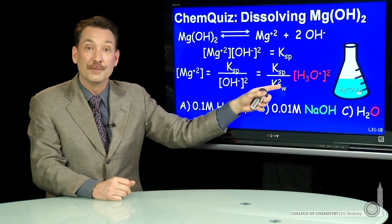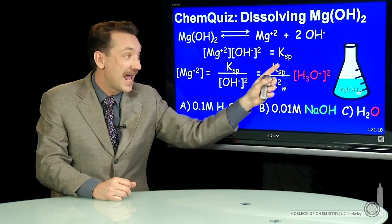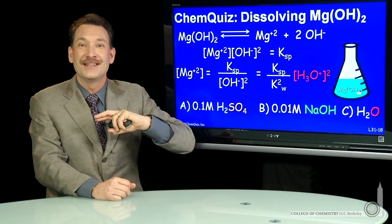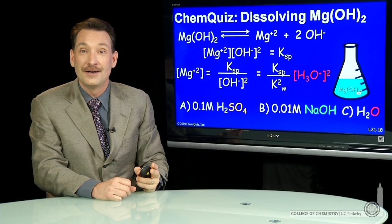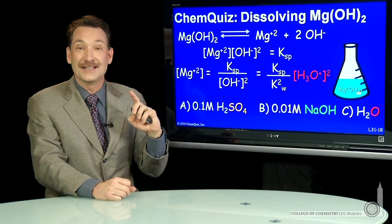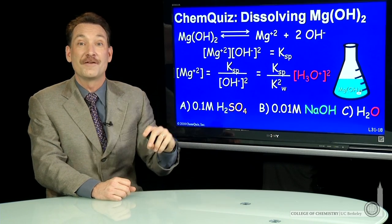So I can use that equilibrium and this equilibrium simultaneously. When I do, I get an analytical expression for the magnesium ion concentration versus the acid concentration. And it's a strong function. It goes as the square of the acid concentration. So as H₃O⁺ goes up, the magnesium goes up as well in a squared fashion.